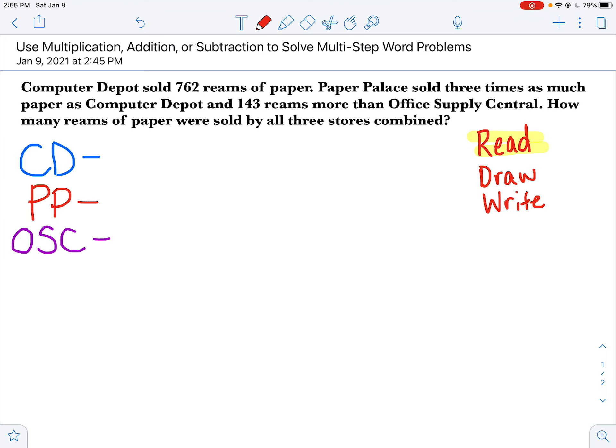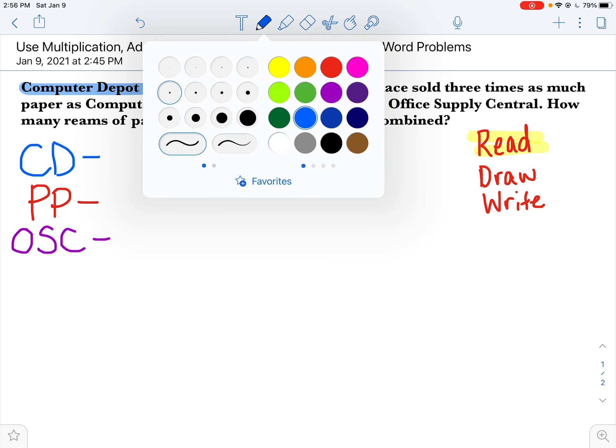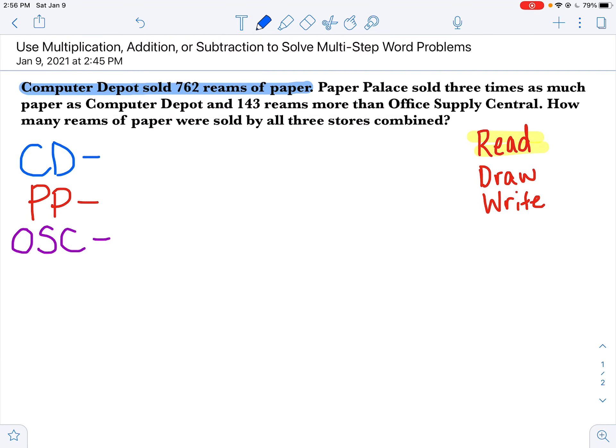So I need to know how many all of these three sold all together. But first, I should organize and figure out how many each single one sold. So here's the really nice thing here for the Computer Depot. It's already given to us. Computer Depot sold 762 reams of paper. It's right there, so I'm just going to write that right down. I'm color coding it—no need for you to color code it unless you find it helpful. 762. So we know that one already. No mathematics involved, it's given to us.